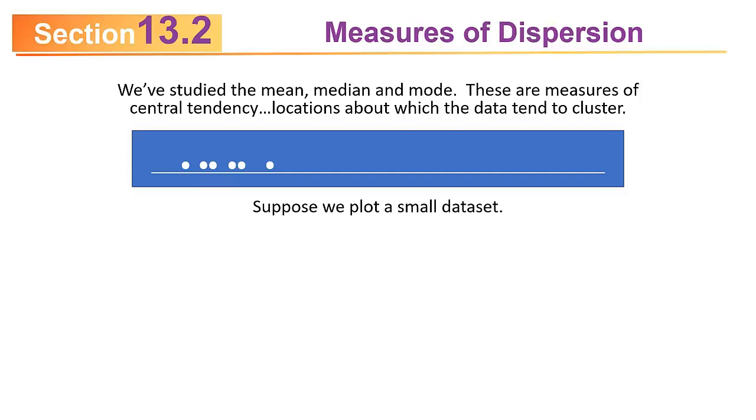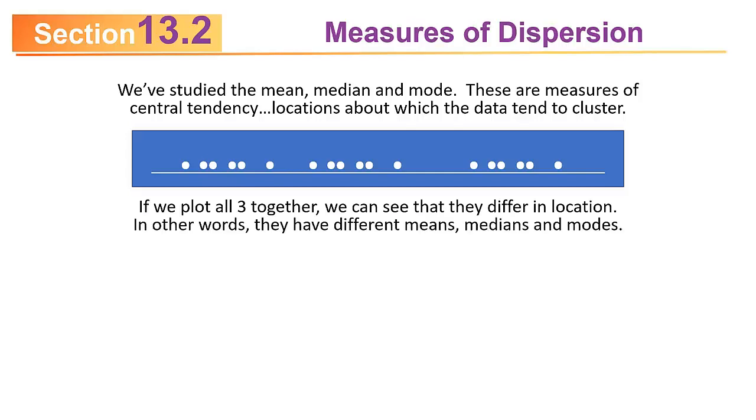For example, suppose we plot a small data set, and then a second one that looks the same but in a different location, and yet a third one. If you plot them all together, you can see the data sets basically look the same. They've just been shifted. They have different means, medians, and modes, but each is equally spread out or dispersed. That's what we mean by dispersion.